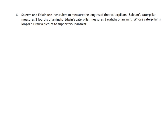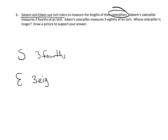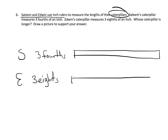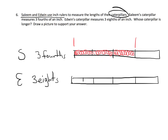Now we'll practice with some word problems. Salim and Edwin use inch rulers to measure the lengths of their caterpillars. Salim's is three-fourths while Edwin's is three-eighths — whose caterpillar is longer? We're going to draw identical whole units. Salim is three-fourths, so we cut that into four pieces and shade in three. For Edwin, three-eighths, we cut his ruler into eight equal pieces and shade in three of those.